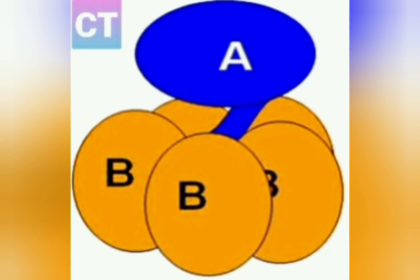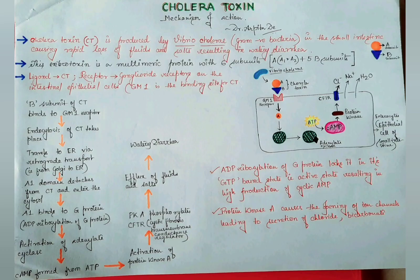The ligand here is the cholera toxin itself, and the receptor is the ganglioside receptors on the intestinal epithelial cells. Specifically, it is GM1 which serves as the binding site for cholera toxin, and it is broken down by galactosidases.